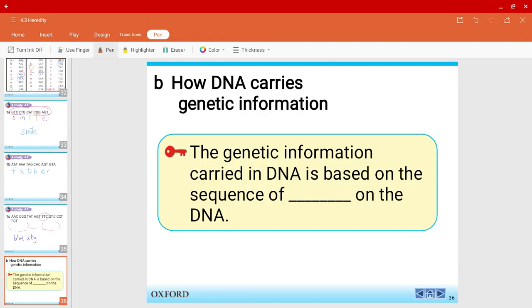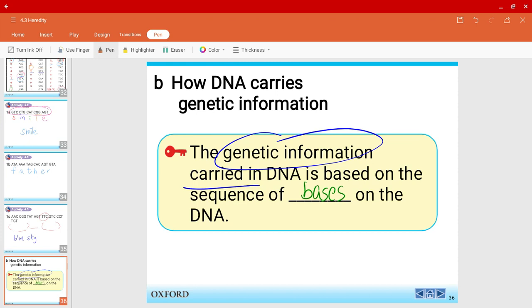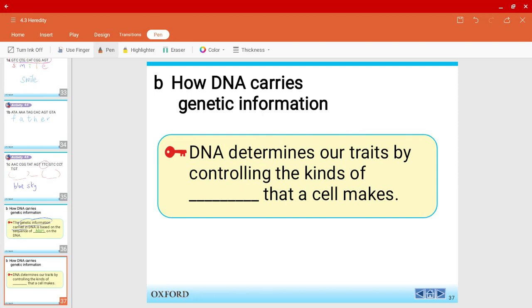All right. So, let's wrap up this part. The genetic information carried in DNA is based on the sequence of blank on the DNA. So, genetic information carried in DNA is based or by the sequence of bases, of course. And then, DNA determines our traits by controlling the kinds of blank that a cell makes. So, DNA can determine our traits. And traits are controlled by the kinds of what can the cell make? The proteins, of course. So, make sure you study back the flow chart. That will be very beneficial for you to understand this whole part. So, that sums up this video. I'll see you guys in the next one. Bye.